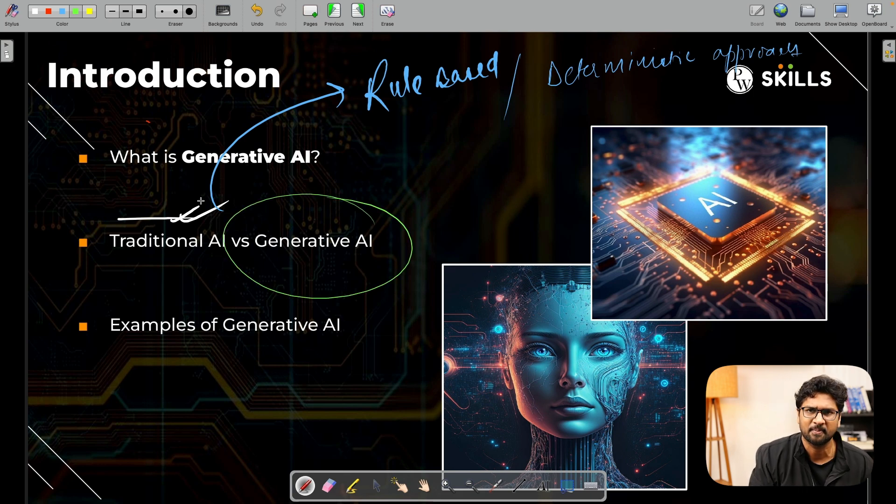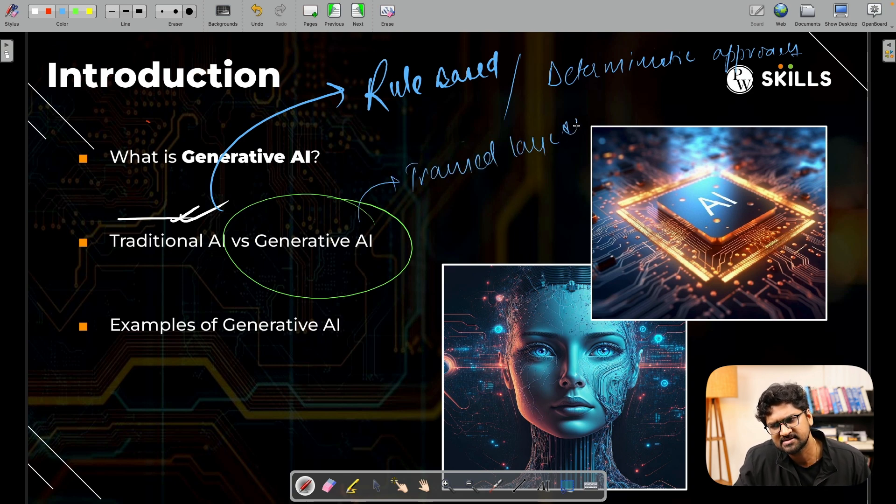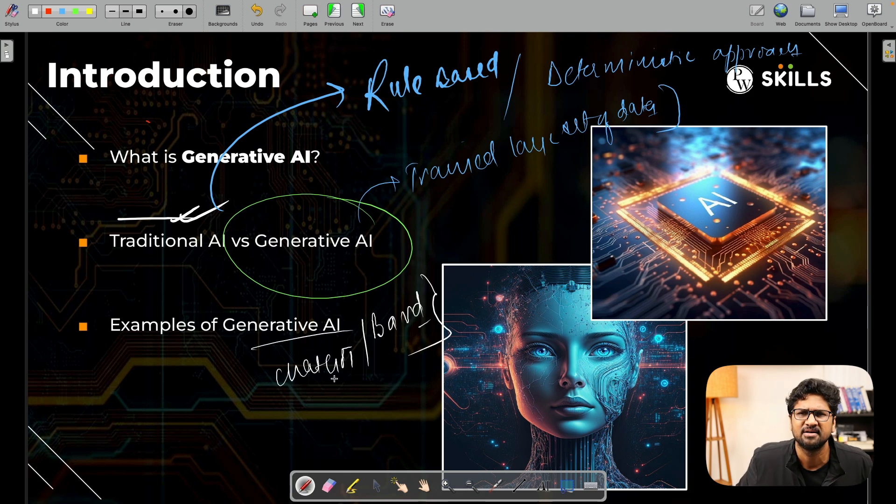On the other hand, generative AI is based on the assumption that it is trained on a large set of data. Once you train it on large data, the model should be able to take new decisions and interact more like humans. For example, the most common generative AI solutions available in the market today are ChatGPT and Bard.